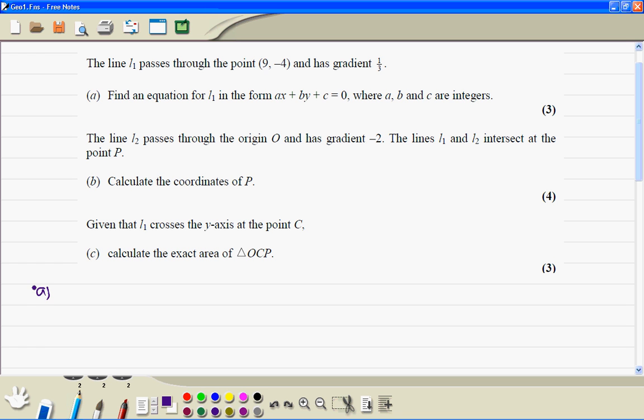Part A. See the gradient, so m is equal to one third, and the coordinate x1 and y1 are 9 and minus 4.